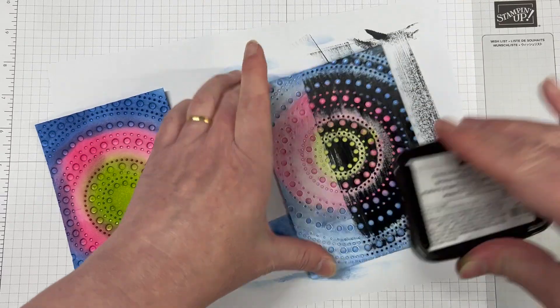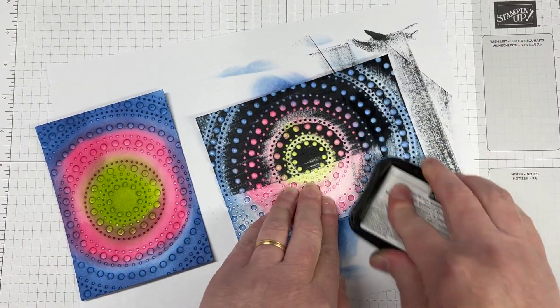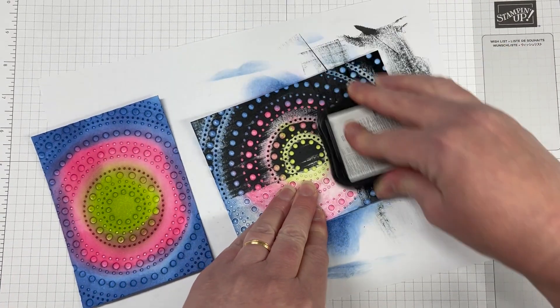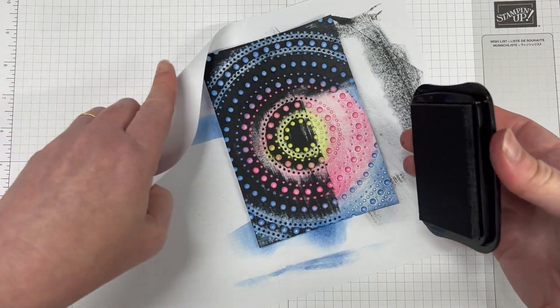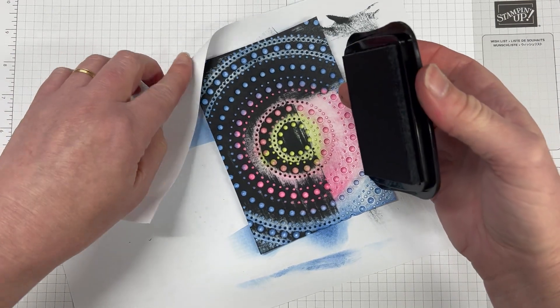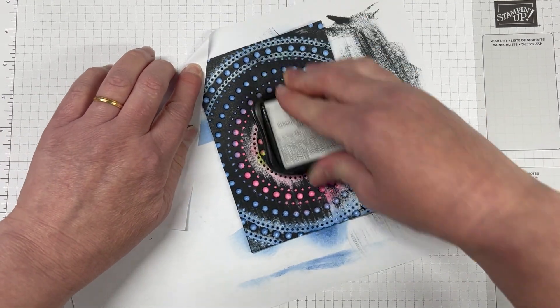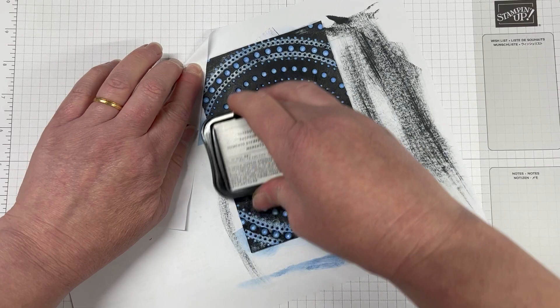And look at that. Isn't this stunning? As you can see, the colour is not as vibrant as the other side, but it still is so pretty. So depending on the colours you use, you're going to have different techniques as well as the different embossing folders that you use.